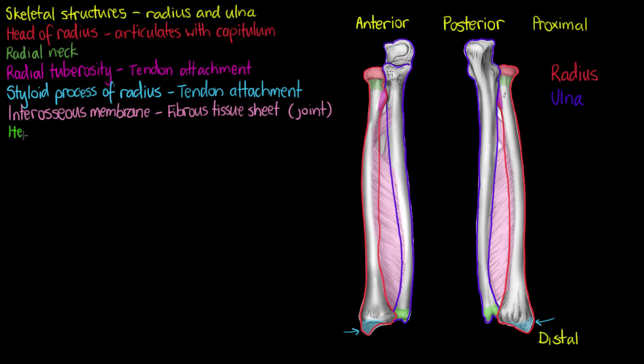Moving on to the structures of our ulna now. The first one we'll see at the distal end of the bone is the head of the ulna. Like the head of the radius, it's going to be an articular surface. You can see that highlighted in green down the bottom.